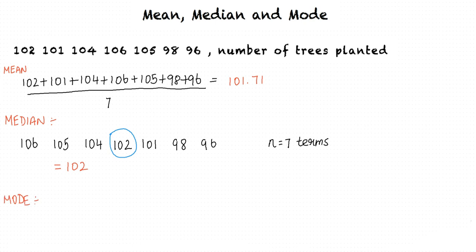Let us move on to calculate the mode. Mode is the term repeated the most number of times, but here no data value is repeated more than once. In this case, since all the data occur exactly once, there is no mode.